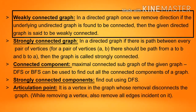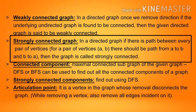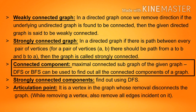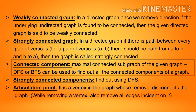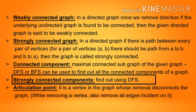Weakly connected graph: in a directed graph, once we remove direction, if the underlying undirected graph is connected, then the given directed graph is said to be weakly connected. Strongly connected graph: in a directed graph, if there is a path between every pair of vertices — for a pair A, B there should be a path from A to B and B to A — then the graph is called strongly connected. Connected component: the maximal connected subgraph of the given graph. DFS or BFS can be used to find all connected components. Strongly connected components are found using DFS.